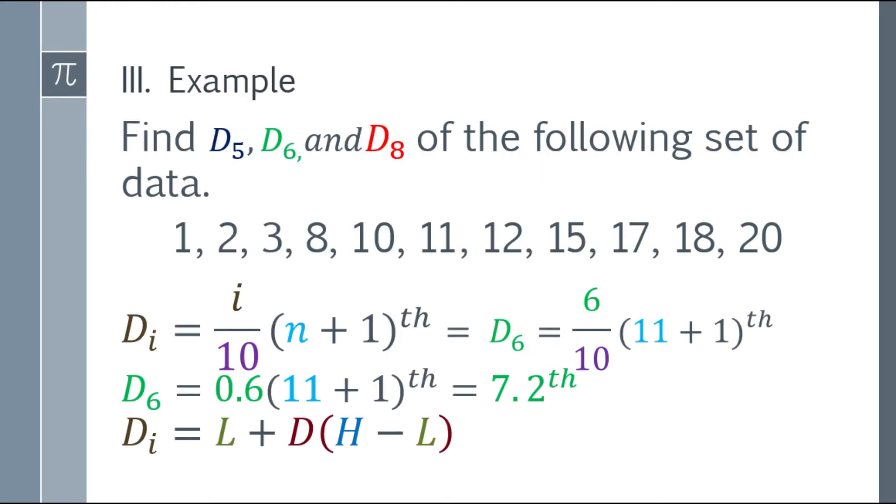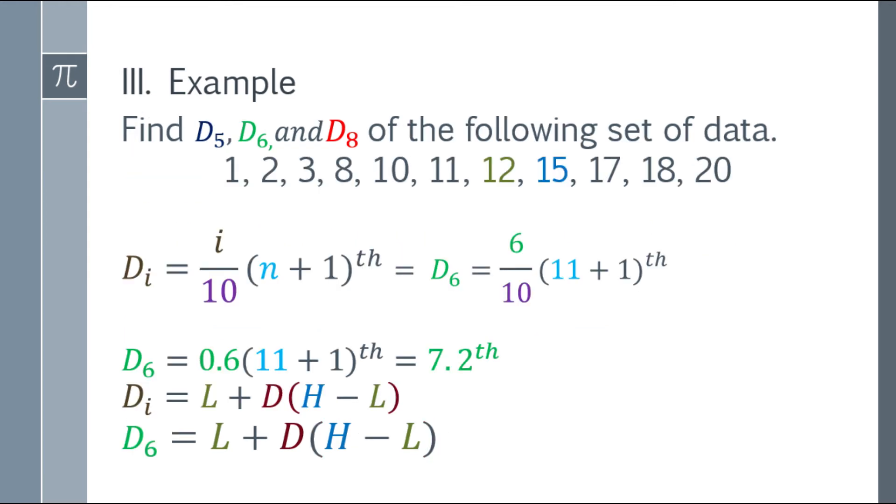So, let's go back to the problem. Write the interpolation formula. Now, substitute the values for D6. Now, what are the lower number and higher number here? If you round down 7.2, that will be 7. And if you round up, that will be 8. So, find the 7th and 8th numbers. The 7th number is 12. And the 8th is 15.